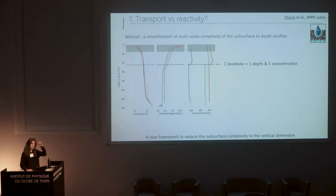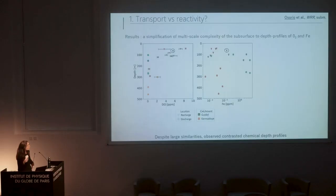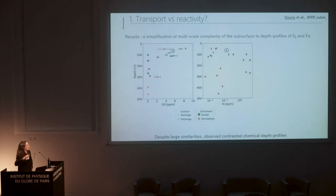So what it means is that information from one well can be reduced to one depth and one concentration. Based on this well logging, we identified the fracture that actually filled the whole well and defined one borehole as one depth and one concentration. We did this for all the different wells shown on the map. Despite the fact that the catchments are very similar, we have very contrasted chemical compositions. The first catchment in green shows oxygen concentrations that are quickly depleted with depth while iron concentrations are increasing. The Kermadoua catchment shows much higher O₂ contents and deeper oxygen inputs, while iron concentrations remain very limited.